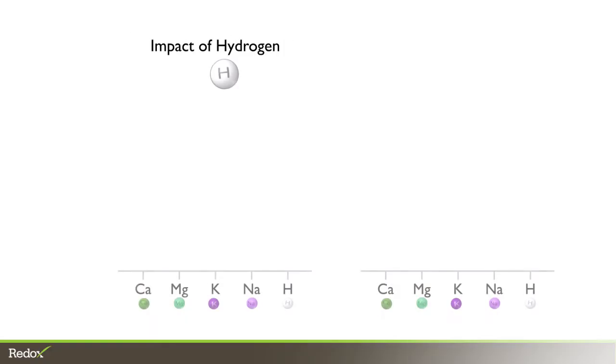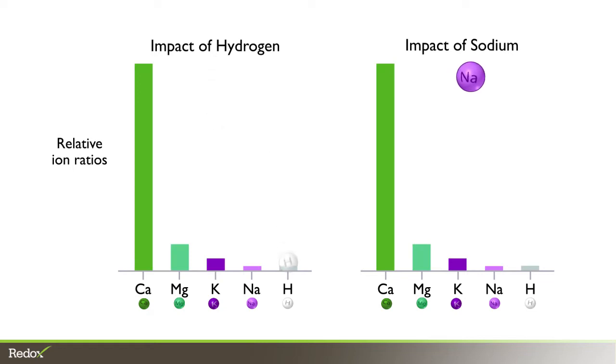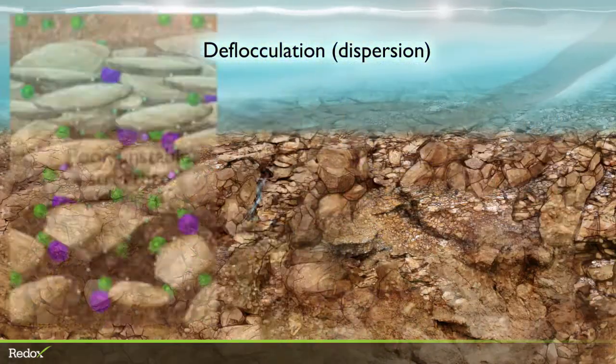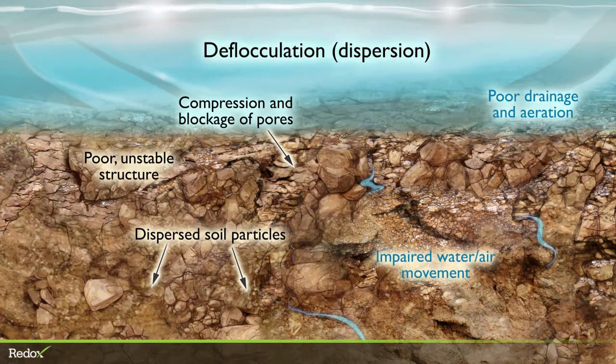Elements like hydrogen and sodium have the opposite impact. Too much hydrogen, too much sodium, or a lack of calcium causes deflocculation or dispersion. This poor structure impairs water and air infiltration into the soil.